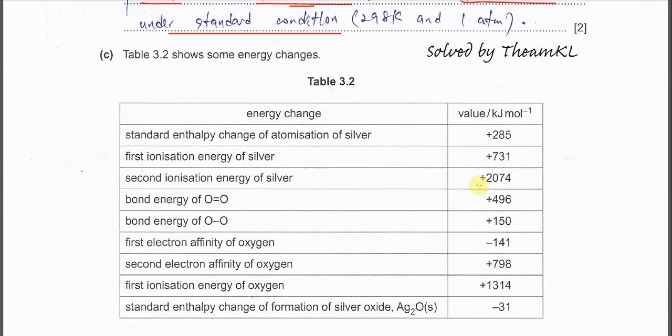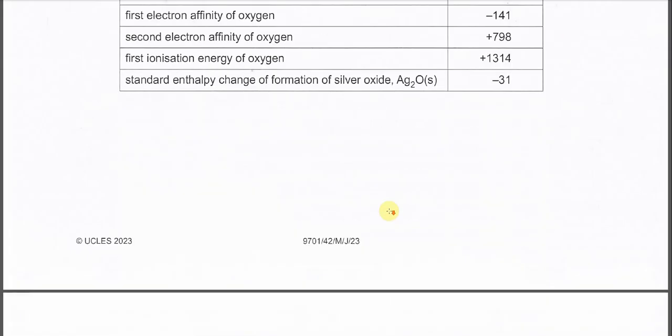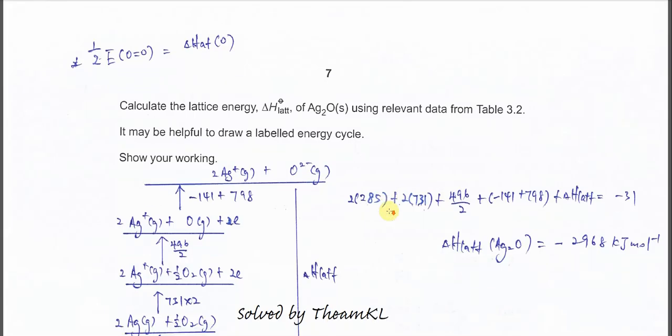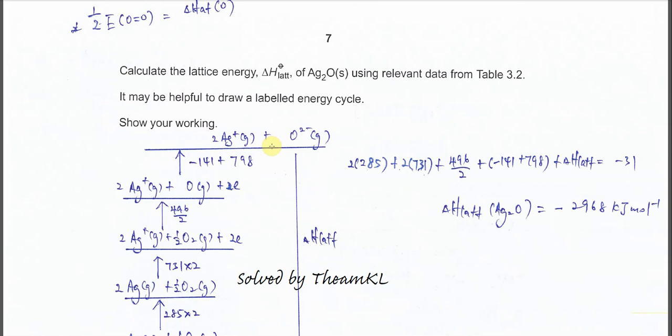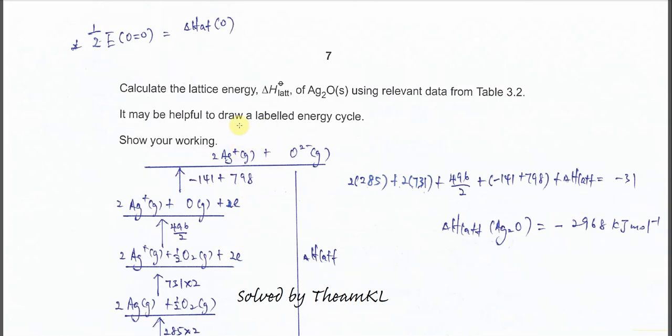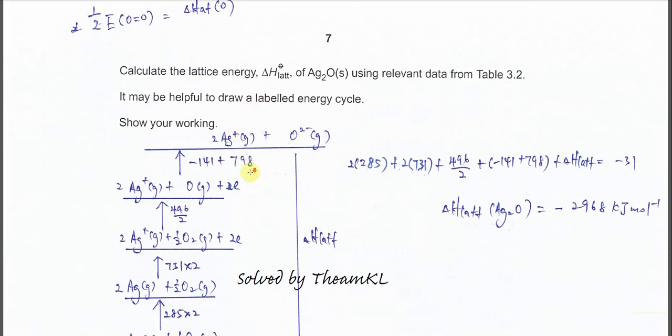So for part C, table 3.2, we're going to use some of these values for the calculation, the lattice energies calculation. So for this part, calculate the lattice energy for the silver oxide and must use the values from this table 3.2. Try, it's actually better for you to draw the energy cycle or the Born-Haber cycle.